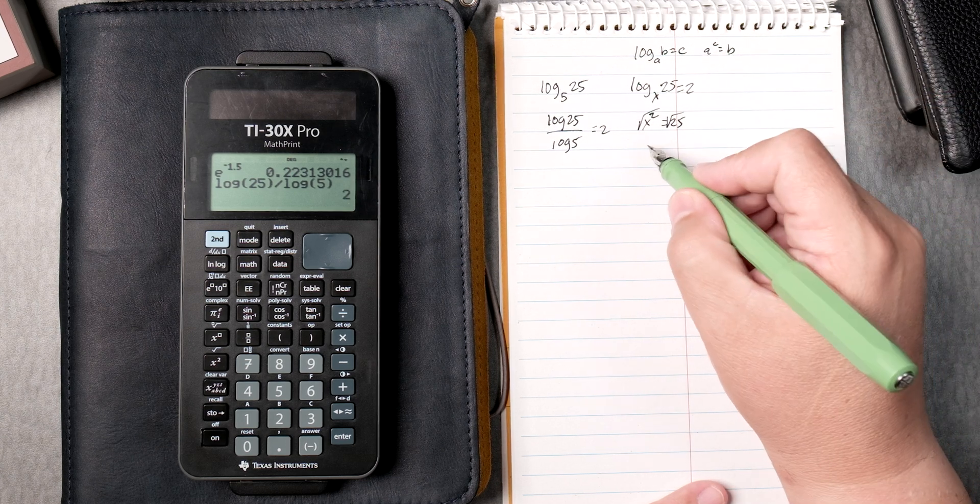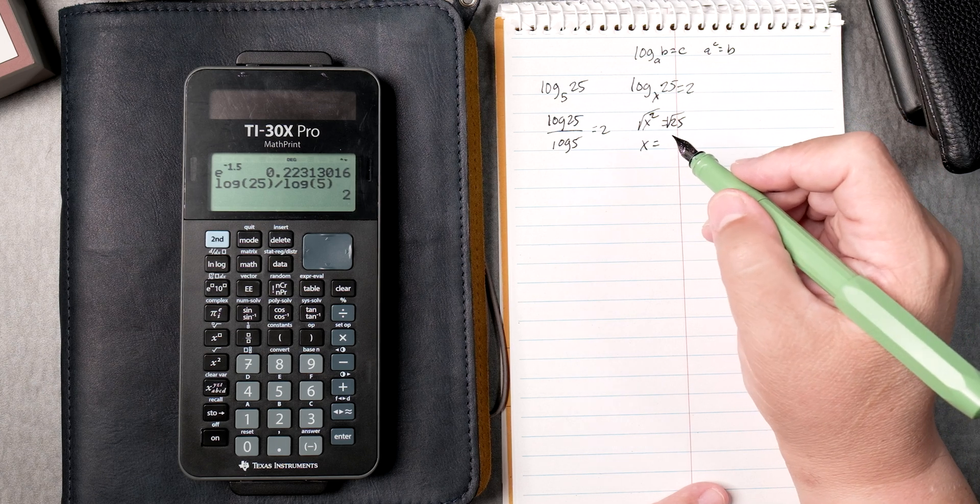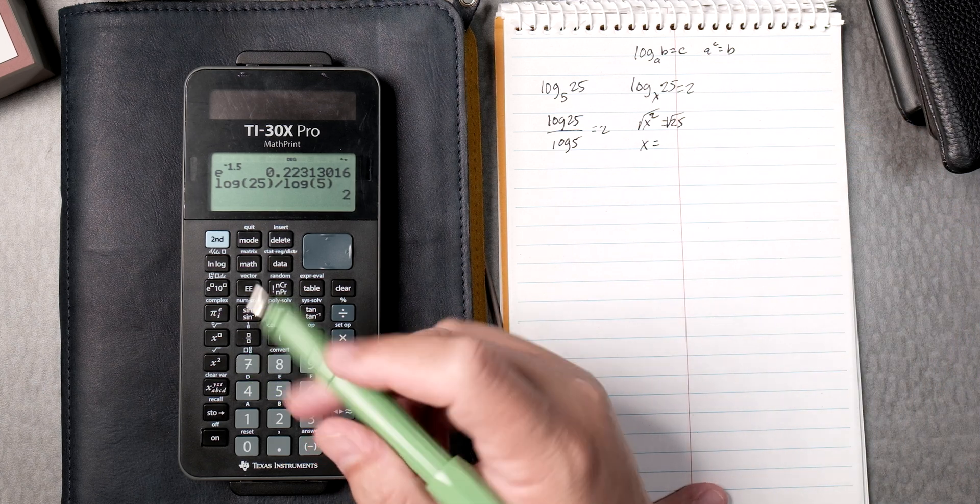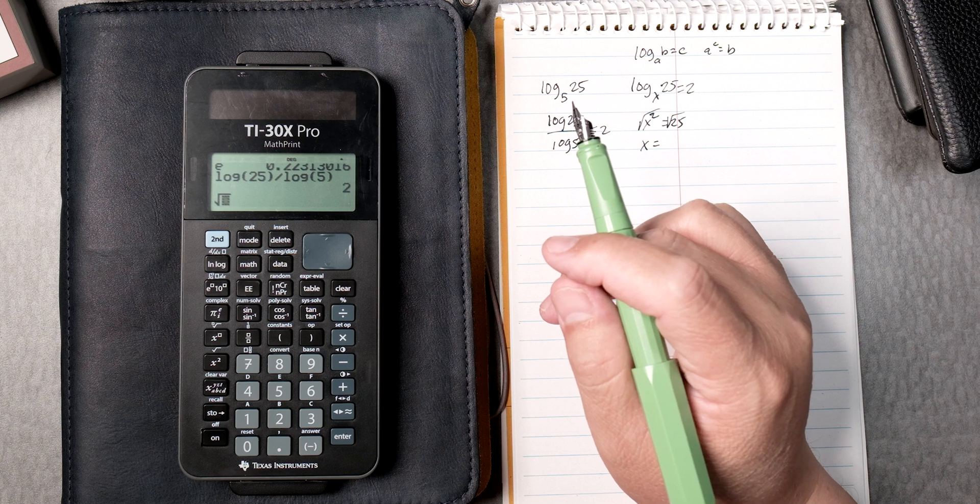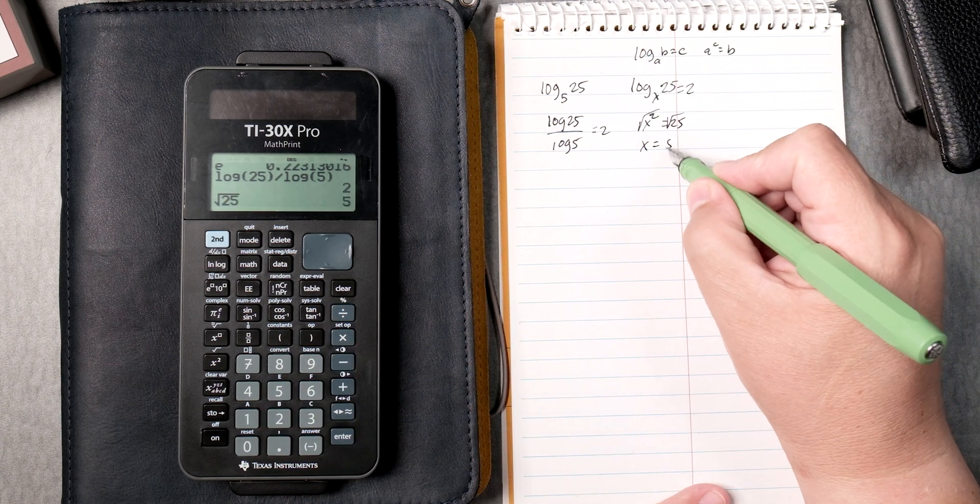Here you can take the square root on both sides. x equals the square root of 25. So the square root is right there. Second, the x squared button, and then you put 25, you enter. It gives you 5.